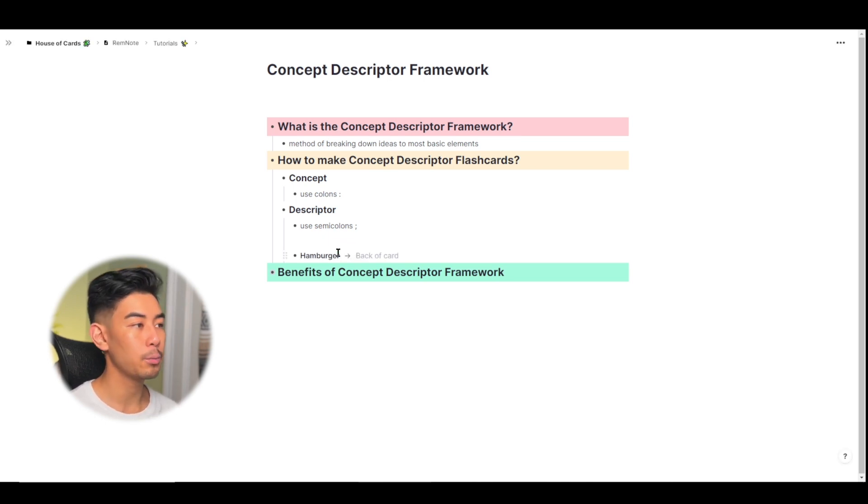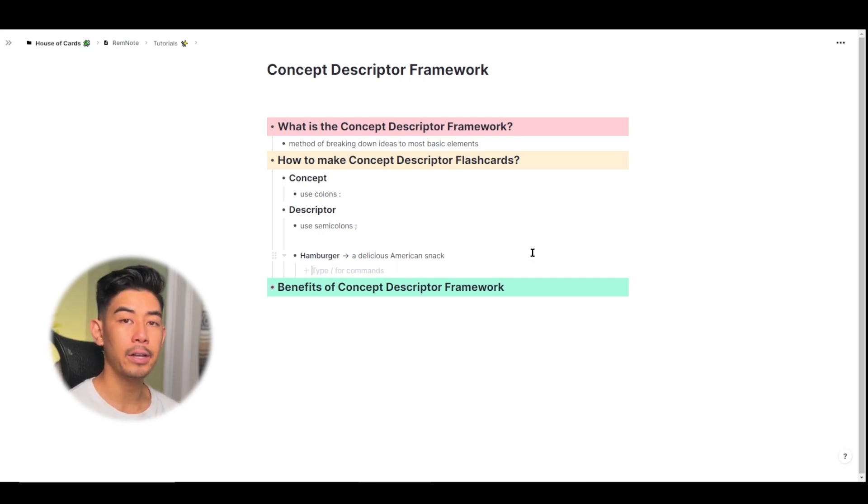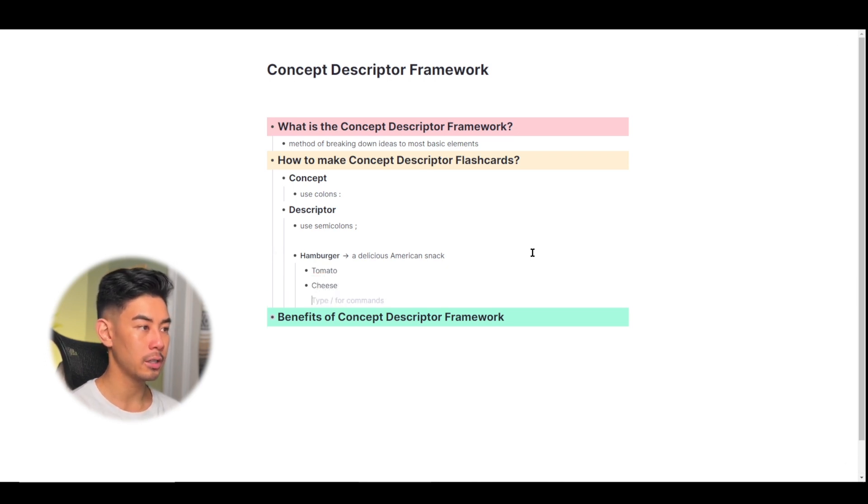You'll see that when you make a concept flashcard, it automatically becomes bolded. And I can break hamburger down into more concepts, like the ingredients that are inside of it. So we have tomato, cheese, lettuce. And since tomato is also a concept, I can turn it into a concept flashcard as well.